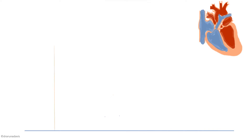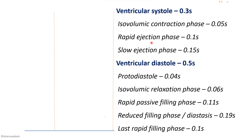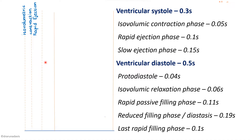To draw the diagram, we first show the different phases. Systole occupies a smaller portion (0.3 seconds) and diastole a larger portion (0.5 seconds), so draw the columns proportionate to that. During ventricular systole, the first phase is isovolumetric contraction at just 0.05 seconds — draw a very small column for that. Next is the rapid ejection phase of 0.1 seconds — draw a bigger column. Then the slow ejection phase of 0.15 seconds, which is the major part of systole.